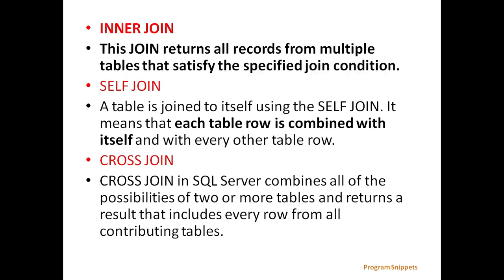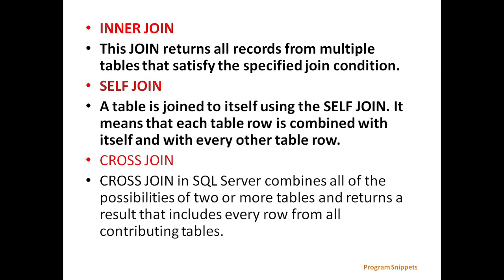Inner JOIN returns all records from multiple tables that satisfy the specified JOIN condition. Self JOIN is when a table is joined to itself, meaning each row is combined with itself and with every other row in the table.